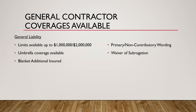The coverages available for GCs are very similar to artisan contractors: limits up to 1 million per 2 million aggregate. We can try to find umbrella coverage for them, though more than likely we're going to need three years of loss runs. Forms available include the blanket additional insured endorsement, primary non-contributory wording, and waiver of subrogation.